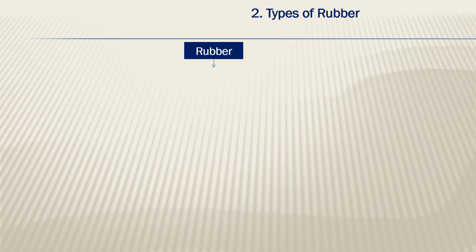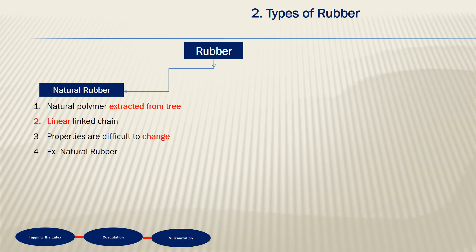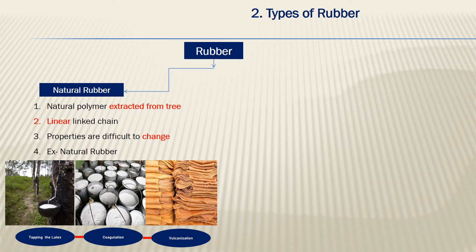Next are the types of rubber. There are two types. The first is natural rubber. Natural polymers are extracted from trees, having a linear link chain, and their properties are difficult to change. As you can see in the images below, latex is tapped and extracted from the tree. It then goes through a coagulation process where it gets solidified, and is further processed and converted into sheets by the vulcanization process. This is the basic raw material for further rubber manufacturing.